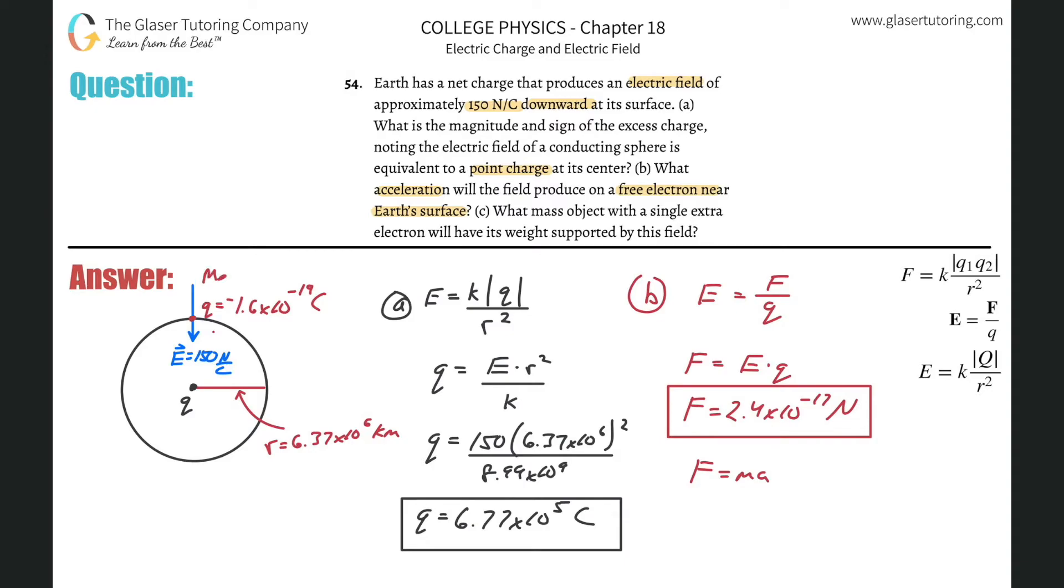So the mass of the electron, we know to be 9.11 times 10 to the minus 31 kilograms. And now, voila, we know everything we need. So we can now calculate. So the acceleration is simply equal to the force divided by the mass. That's simply going to be equal to the 2.4 times 10 to the minus 17th, all divided by the mass of that electron, which is 9.11 times 10 to the minus 31.